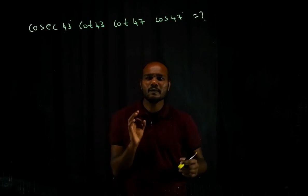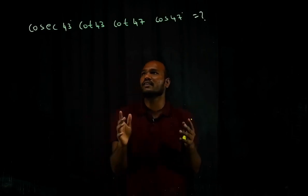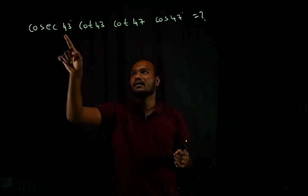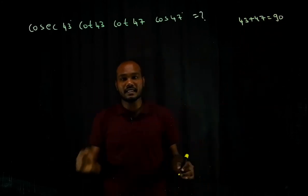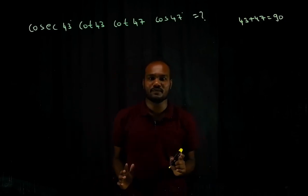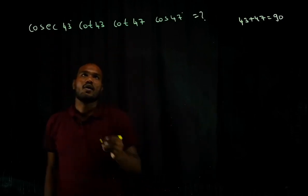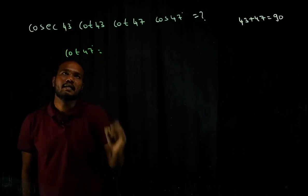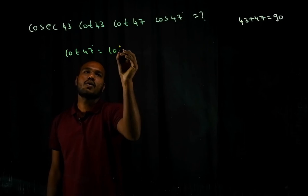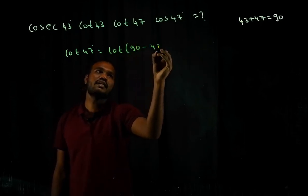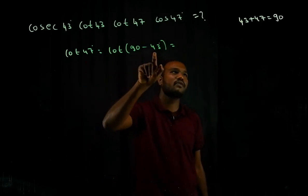The answers will typically be 1 or a small integer. Notice 43 + 47 = 90°. When two angles add to 90°, use the complementary angle trick. Don't touch the 43° terms; convert 47° as cot 47° = cot(90° − 43°).